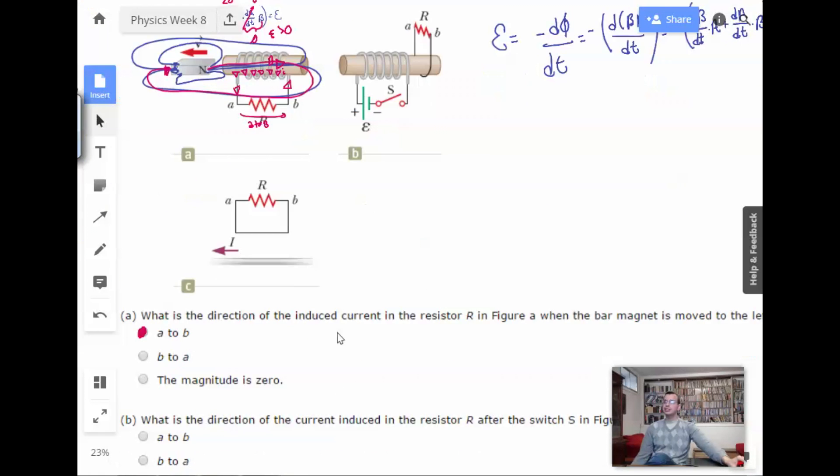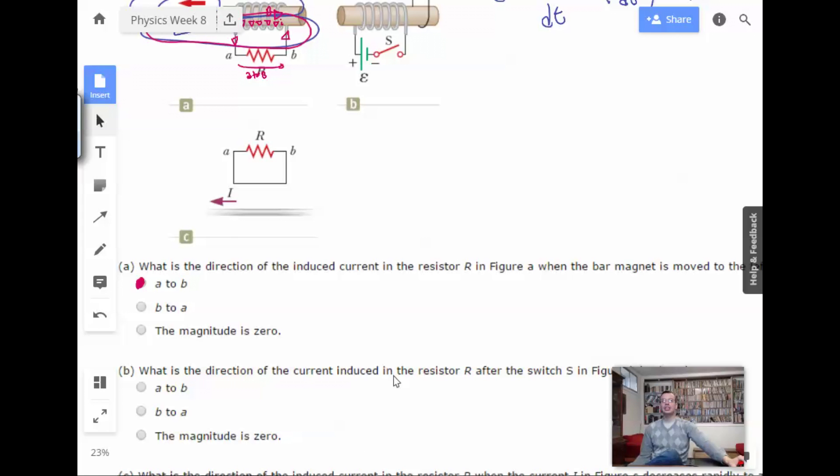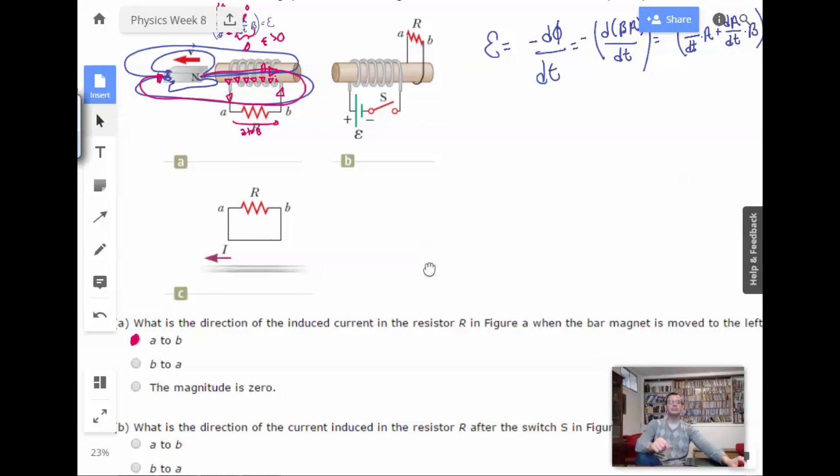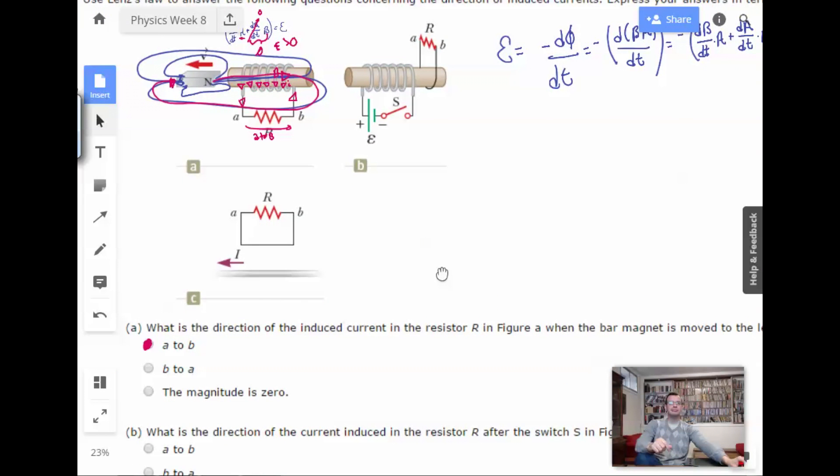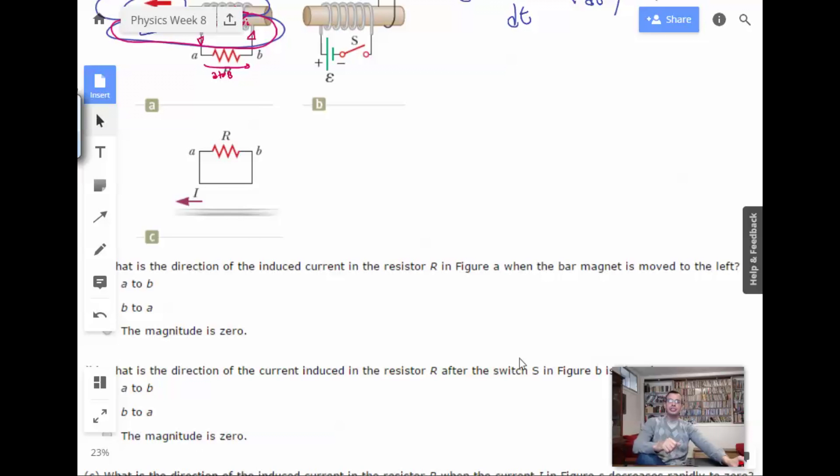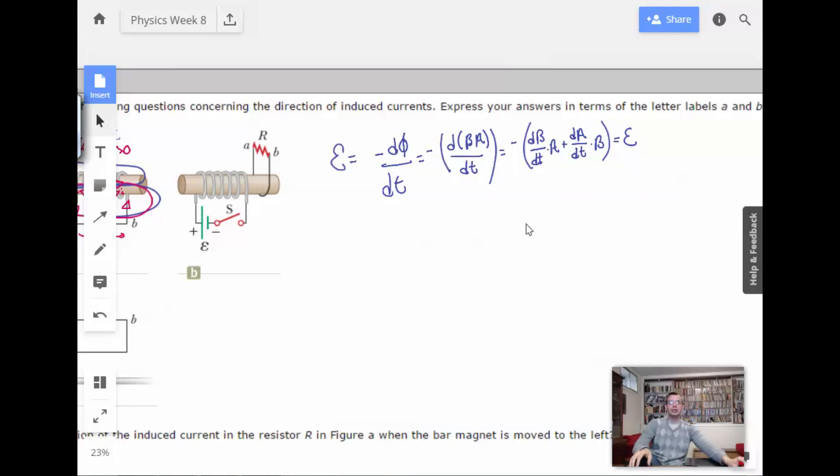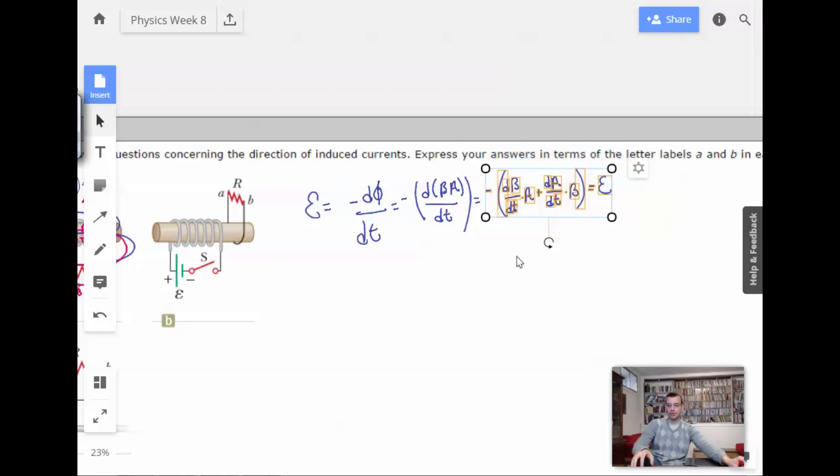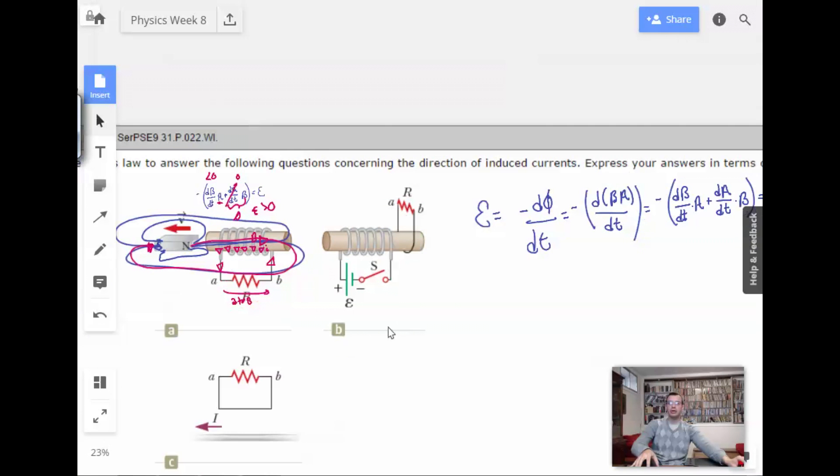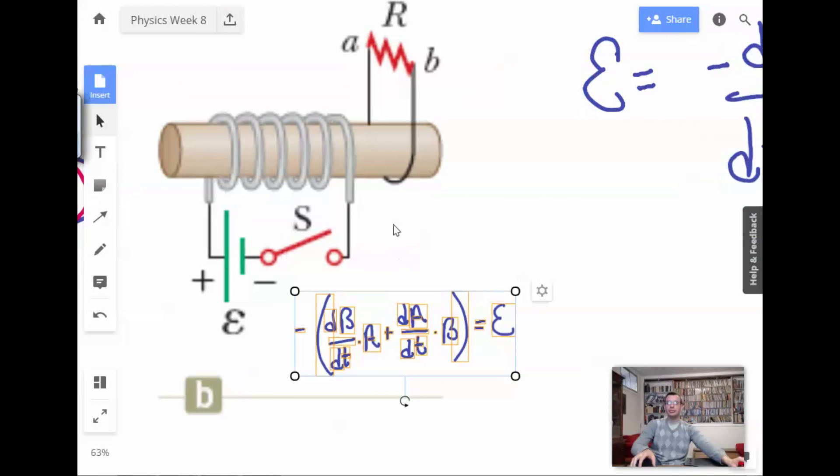All right. On to part two. Probably going to ask the same question. What is the direction of current induced? Why is it induced current here? But this is current induced. I don't know. In the resistor R after the switch S in figure B is closed. All right. Come on, math. Don't fail me now. Make small. Put there. Zoom in. Okay.